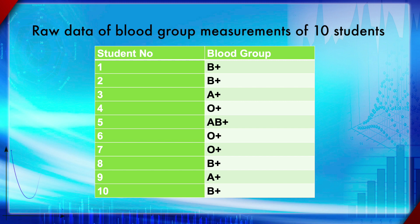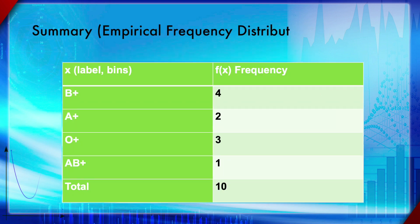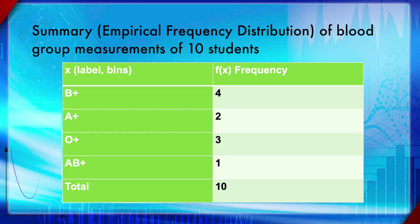EFD tables are nothing but counts of events. Here is another example: raw data of blood group measurements of 10 students. This is not a summary — just raw data. You can summarize it by counting: how many B+, A+, AB+, AB−, and so on. Since this is a discrete set, you don't need the rule of thumb; just look at the data and decide what bins to use.